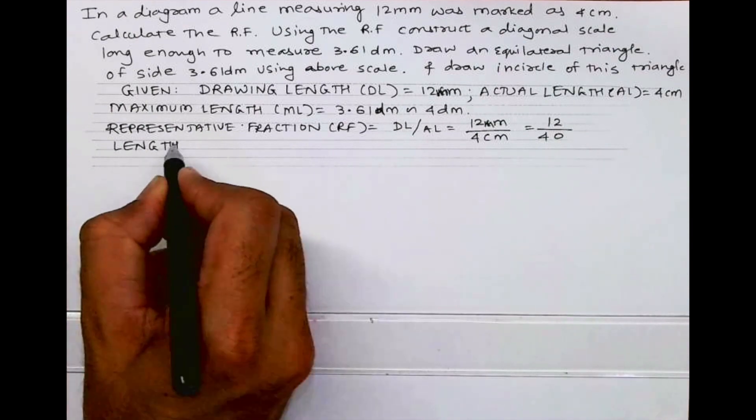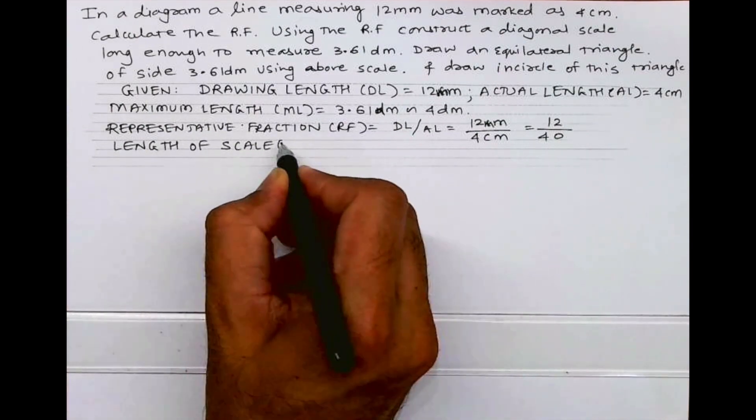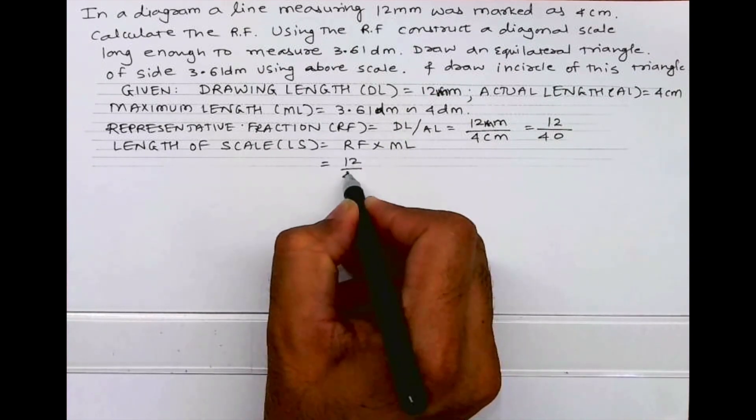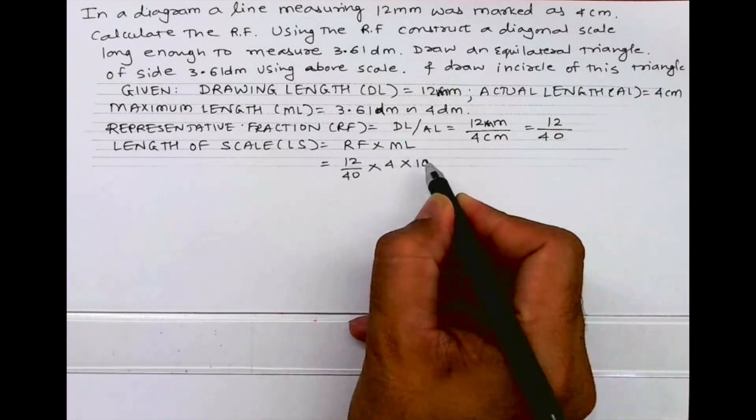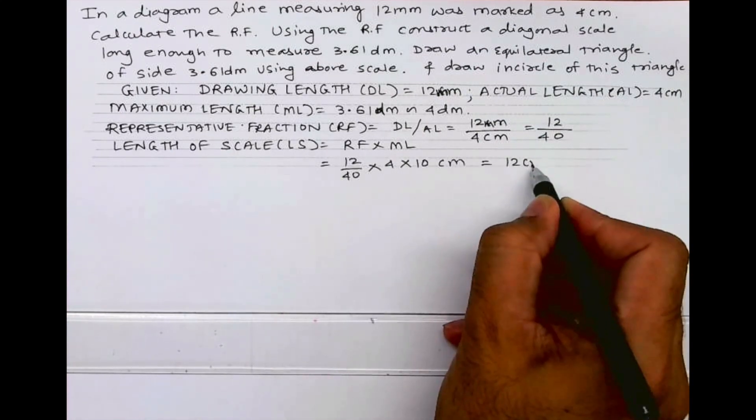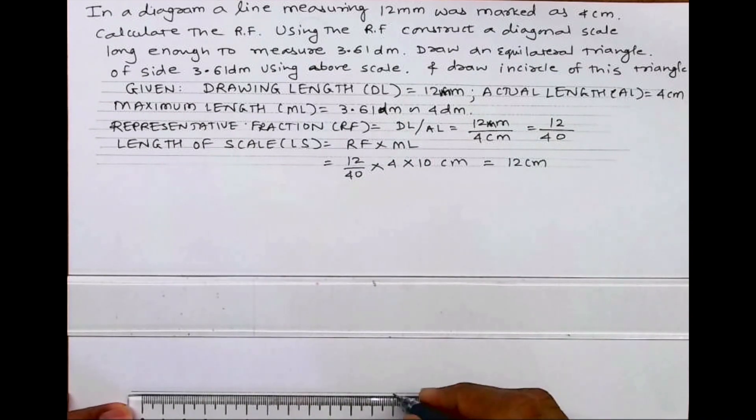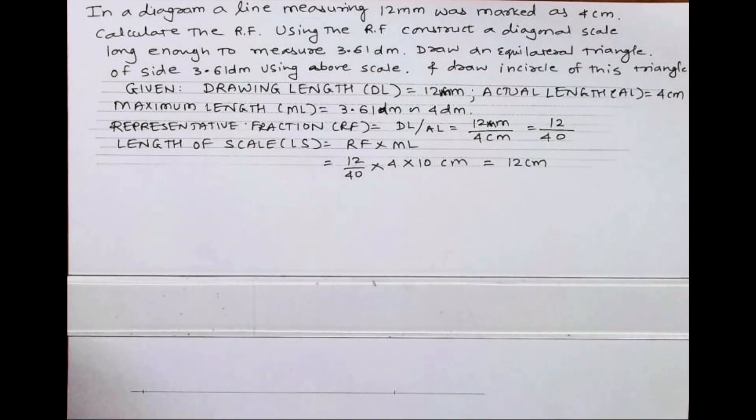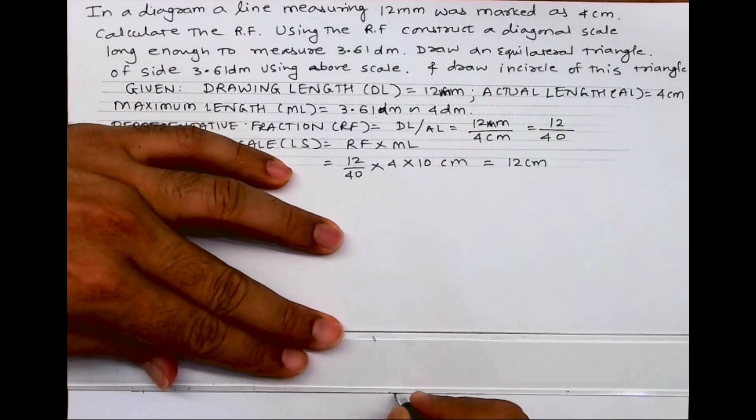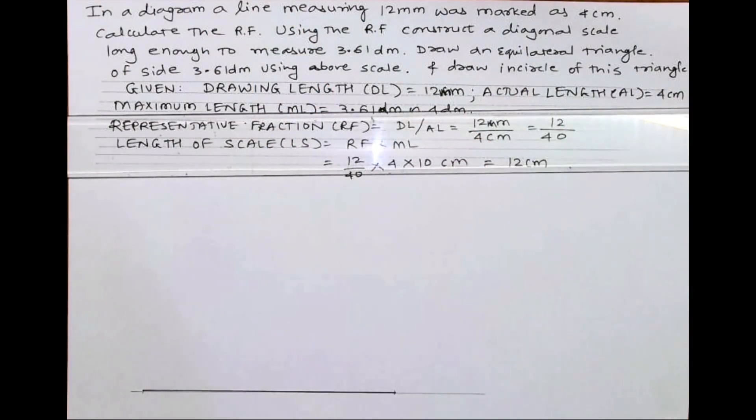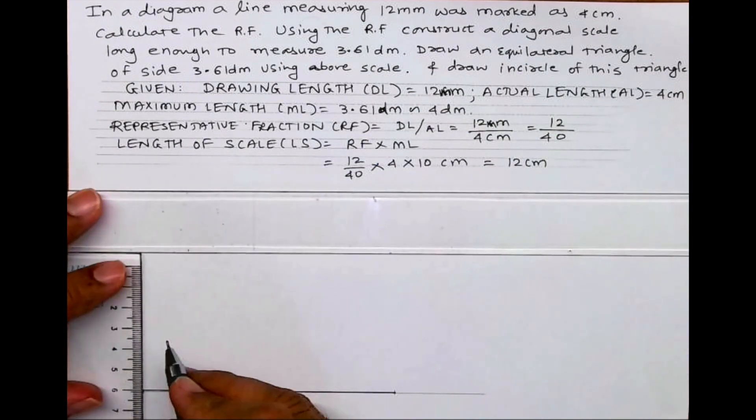Length of scale: Ls equals RF into ML. RF is 12 upon 40, maximum length is 4 into 10, which equals 12 centimeter. Now first we'll draw 12 centimeter long line. We'll draw one horizontal line and on that we'll mark 12 centimeter, that is length of scale.